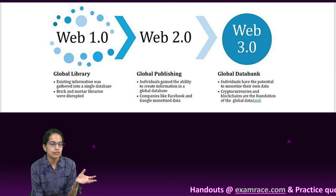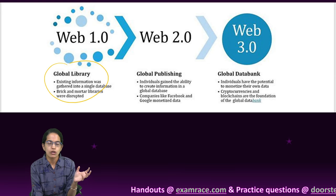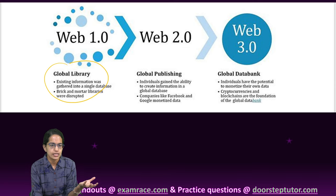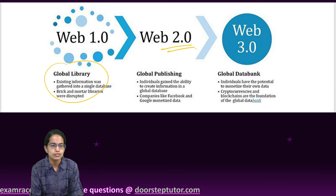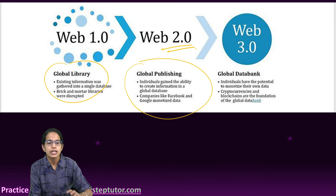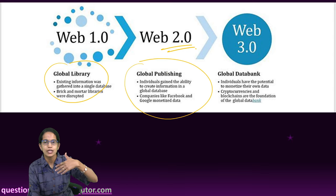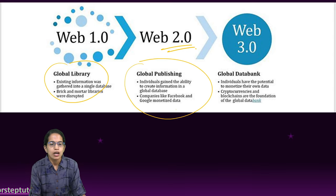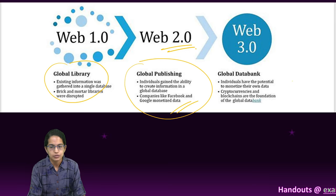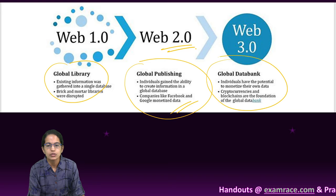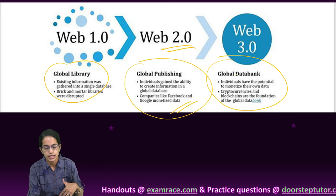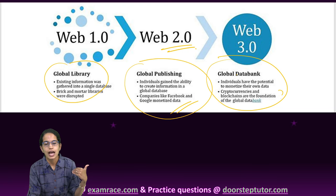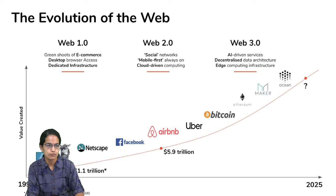Web 1.0 focused on global literacy — mainly published content. Web 2.0 is user-generated content, so we call it global publishing, where individuals have the capability to publish content. Companies like Google and Facebook have been monetizing data through it. Web 3.0 is the global data bank where individuals can monetize their own content, and blockchains and cryptocurrencies are the basis for it.